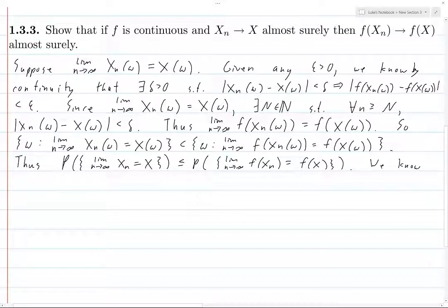But what else do we know? We know that this probability or the measure of this set is equal to 1. Because that's what it means for x_n to converge to x almost surely. It means precisely this.